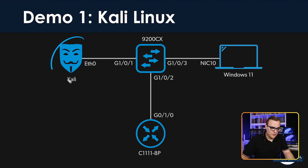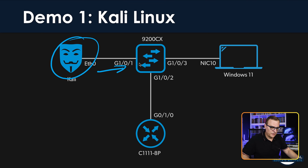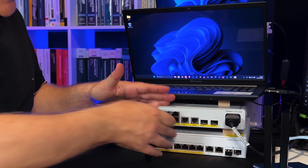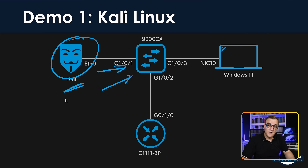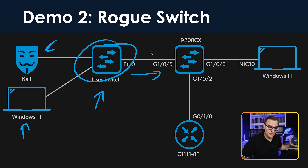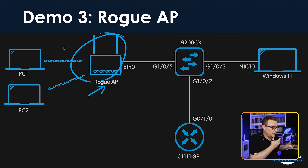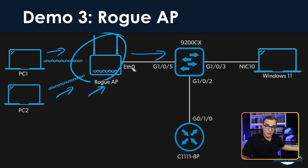Port security stops different scenarios. You'll stop rogue devices from being connected to your network — for example, the Shark Jack, or Kali Linux running on a computer connected to the network. The idea is to stop people from connecting hacking devices directly to your network. You can also stop users from connecting a little switch to your port, allowing multiple unauthorized devices, or bringing in rogue Wi-Fi access points that allow people from outside your organization access to your network.